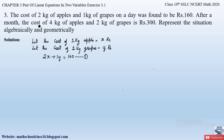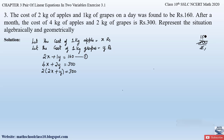Similarly, after a month, 4 kg of apples and 2 kg of grapes was bought for Rs. 300. So we take 4 into x plus 2 into y equals 300. If you observe, this equation can be simplified further. Taking 2 common outside gives 2(2x + y) = 300. Sending 2 to the right hand side gives 300 divided by 2, which is 150. So we get the equation as 2x + y = 150. Let us mark this as equation number 2.